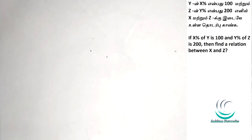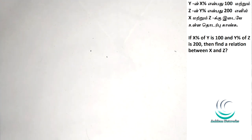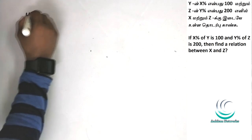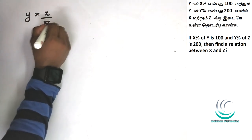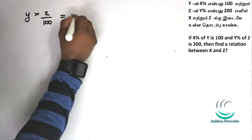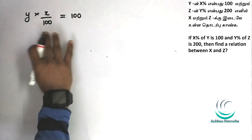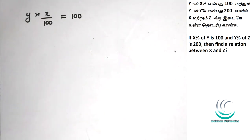First question: y is x% of 100, z is y% of 200. We need to find the relation between x and z. This is the equation for 100, so it's equal to 100. If we change the equation, you'll understand the basics.